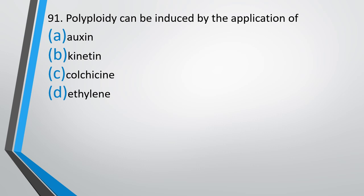Question number 91: Polyploidy can be induced by application of — auxin, kinetin, colchicine, or ethylene? The correct answer is Option C, i.e., colchicine.